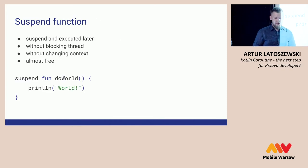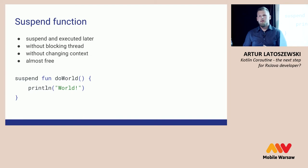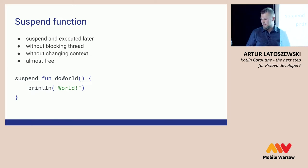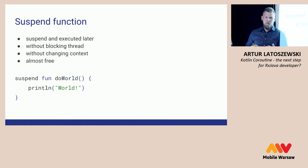About some basic concepts: in Kotlin we have a suspend function. This is the most important keyword. "suspend" is a function modifier — it allows a function to suspend and tells the code that it can be executed later without blocking the thread, without changing the context. Almost free. As I said before, underneath it is just a state machine with callbacks.